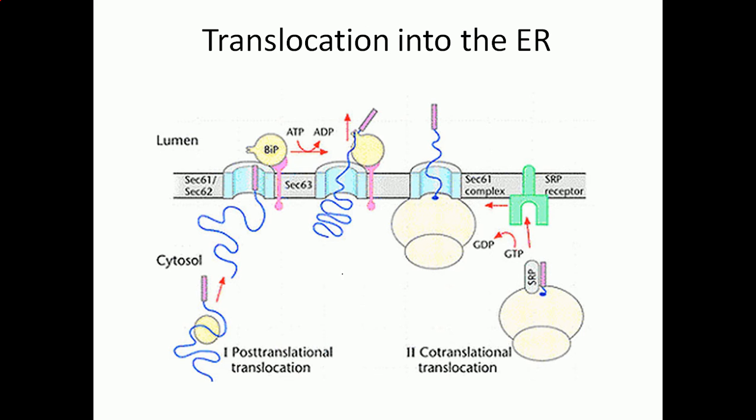The translocation can occur usually most commonly as co-translational translocation, which means the ribosome is sitting onto the membrane of the rough endoplasmic reticulum, or RER.